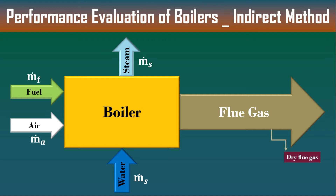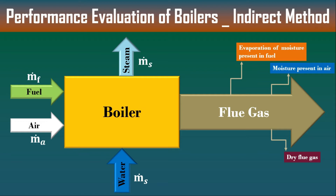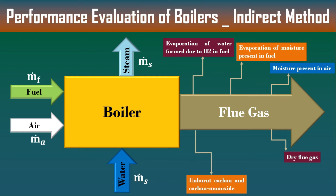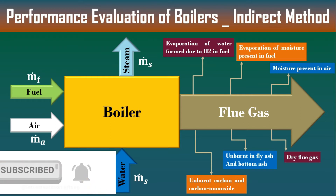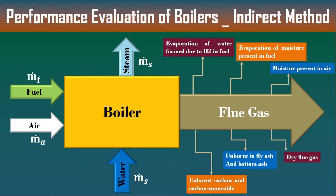The first heat loss is due to the dry flue gas. The second is heat loss due to moisture present in air. The third is heat loss due to moisture present in fuel. The fourth is heat loss due to hydrogen present in fuel. The fifth is heat loss due to unburnt carbon and carbon monoxide present in flue gas. The sixth is heat loss due to fly ash as well as bottom ash. We will also consider unaccounted losses, which may be due to radiation or other purposes. Blowdown loss is not considered here.